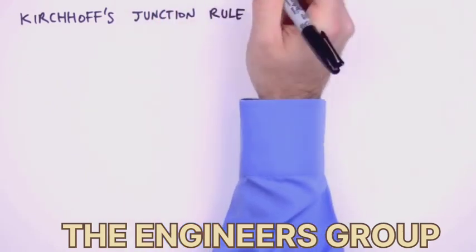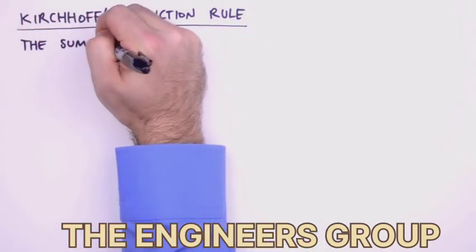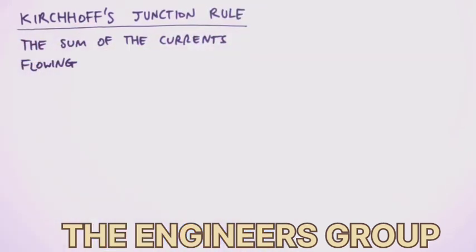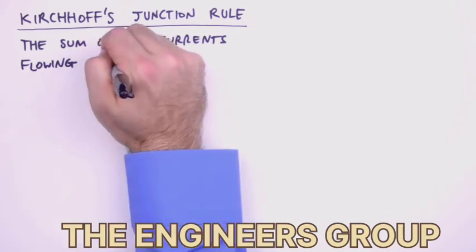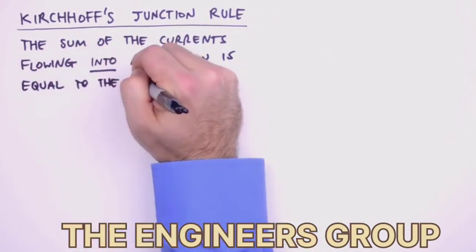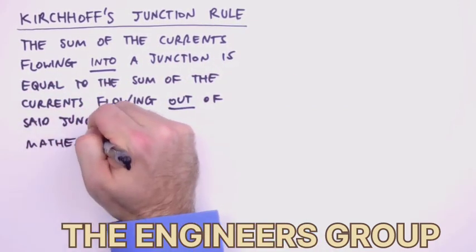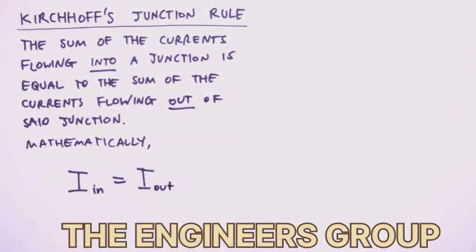The first rule that we'll examine is Kirchhoff's junction rule. The junction rule states that the sum of the currents flowing into a junction is equal to the sum of the currents flowing out of said junction. Mathematically speaking, current in equals current out. Sounds simple enough, right?